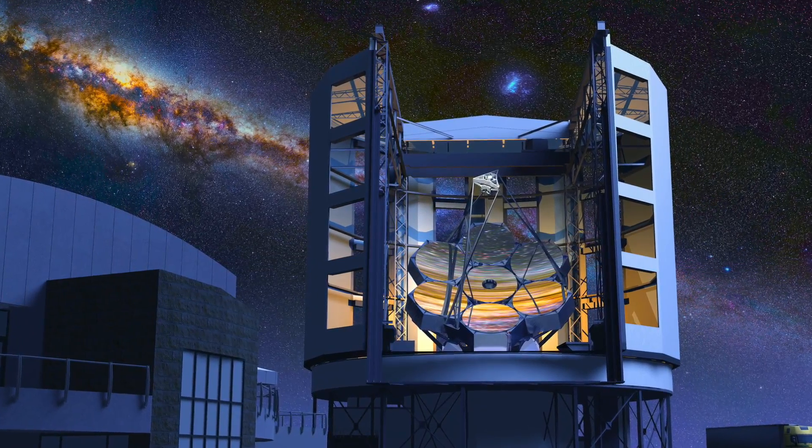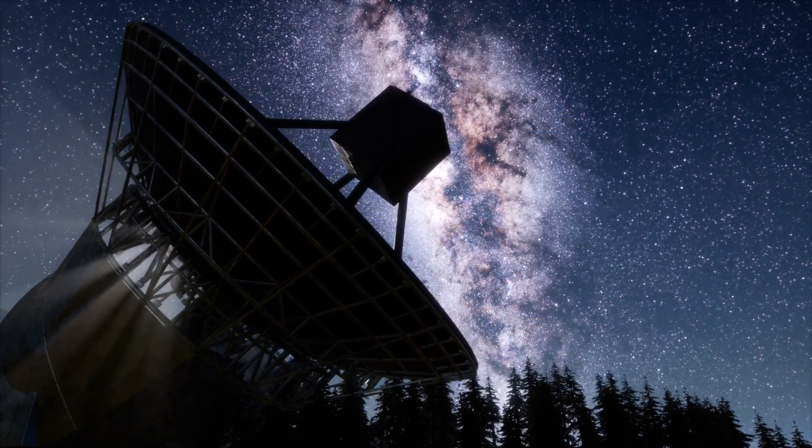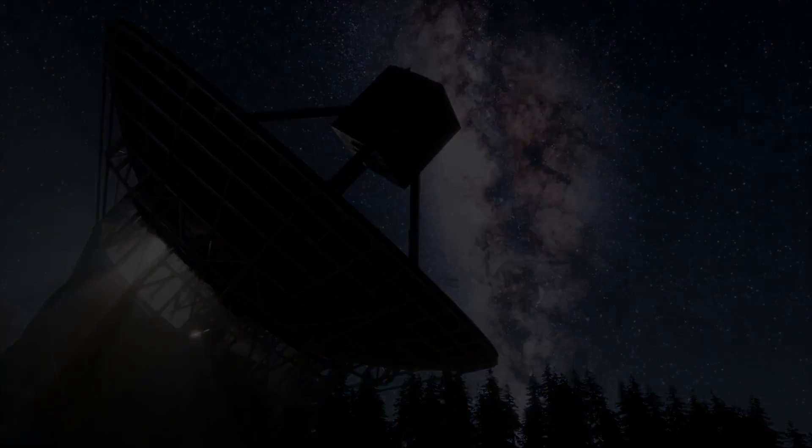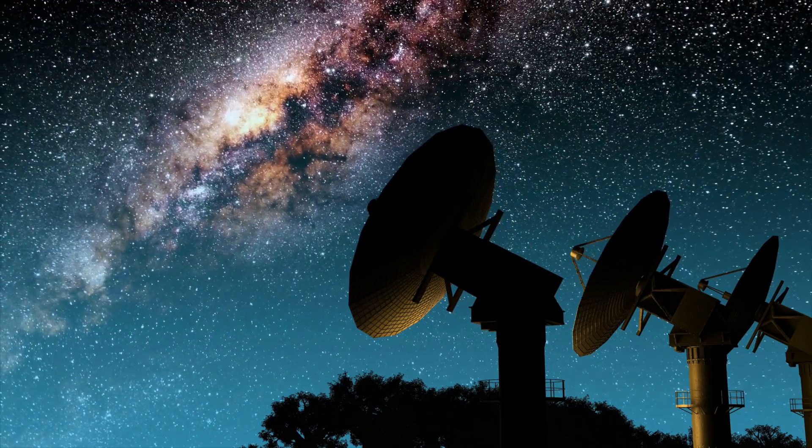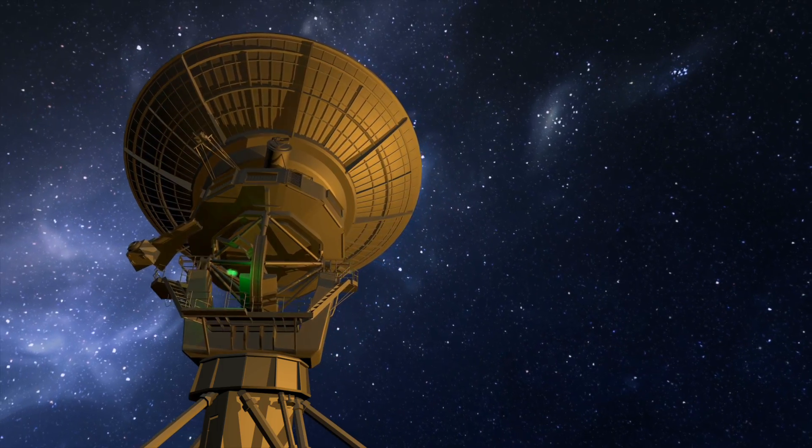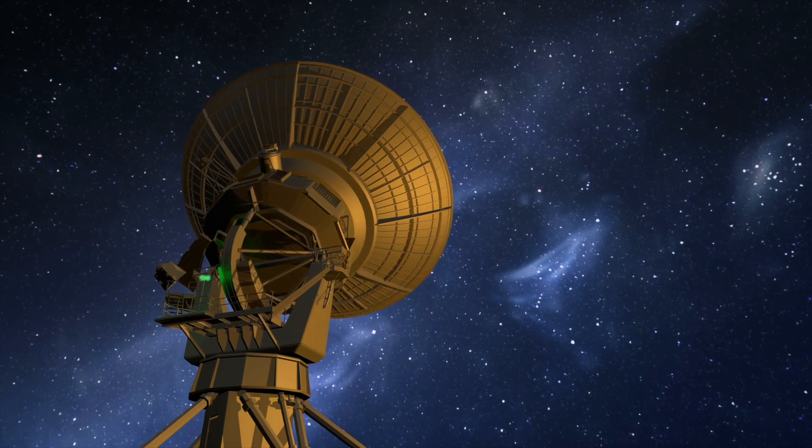Compared to ground telescopes, space observatories were free from atmospheric absorption of infrared light. Space observatories opened up a whole new sky for astronomers. Ground-based telescopes must look through Earth's atmosphere, which is opaque in many infrared bands.